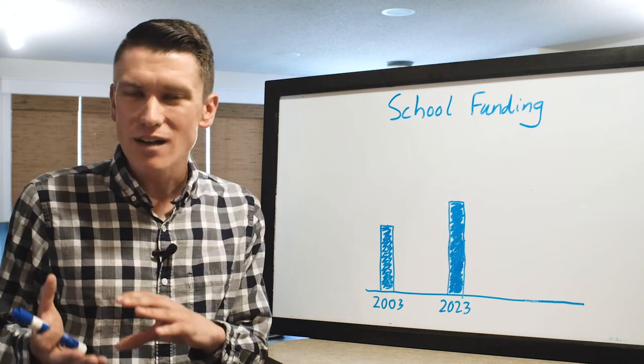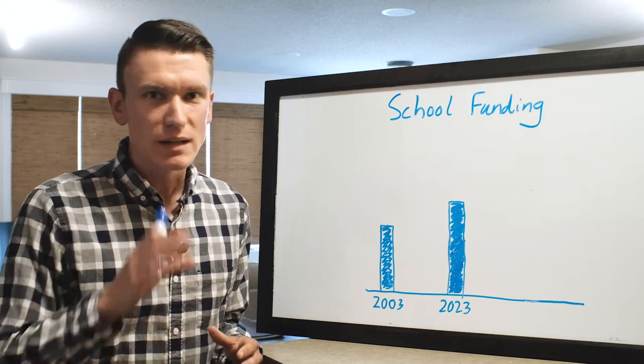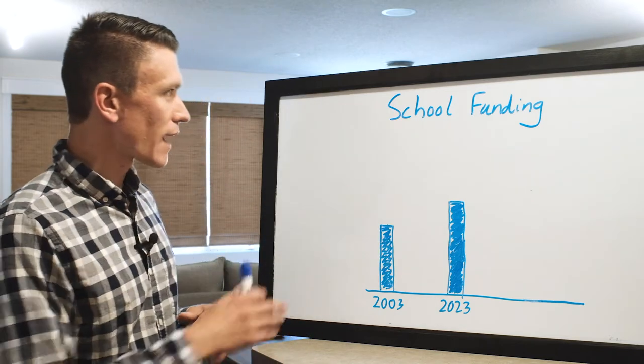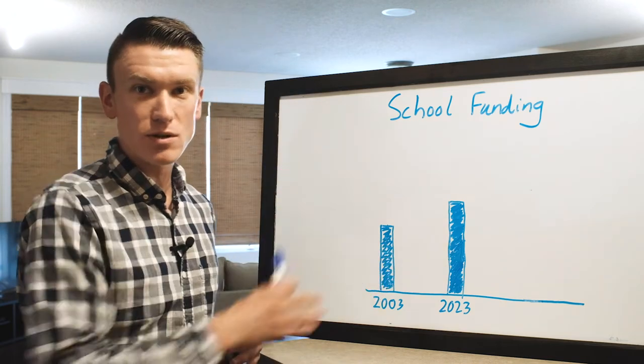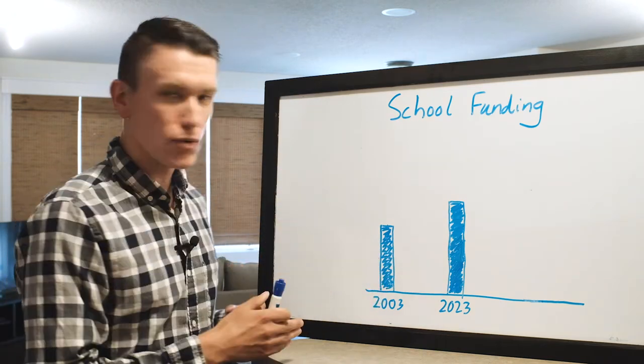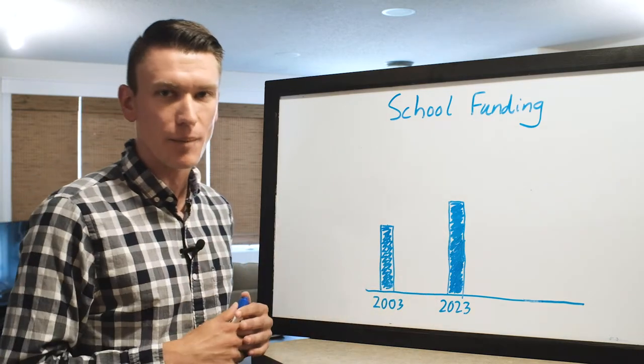But sometimes funding is also part of the problem and I want to explain why. So here on our chart we've got school funding and this is the funding per student in 2003 and in fiscal year 2023 which is coming up.